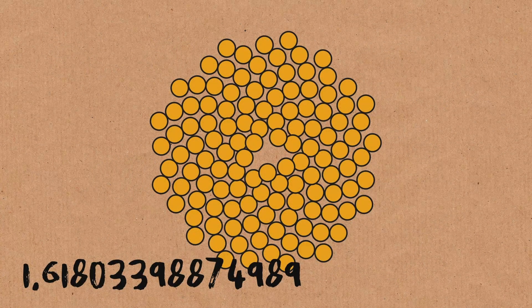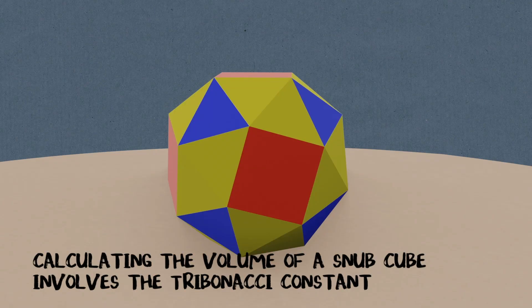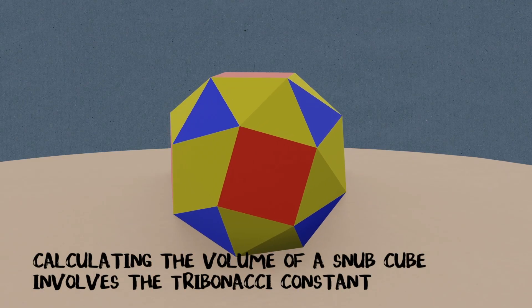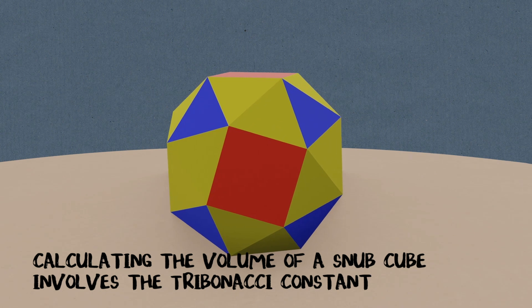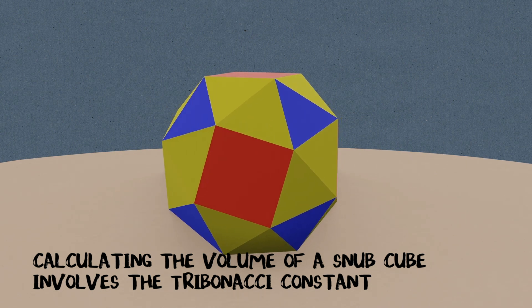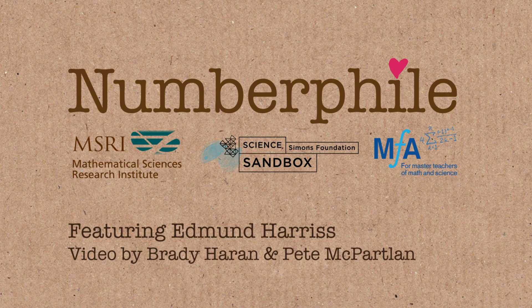Do they exist in sunflowers and things like that? They don't exist in nature in the way that the Fibonacci numbers — which aren't quite as popular in nature as they're meant to be — do. The only place beyond this that I know of them is an object called the snub cube, which is quite an attractive little polyhedron.